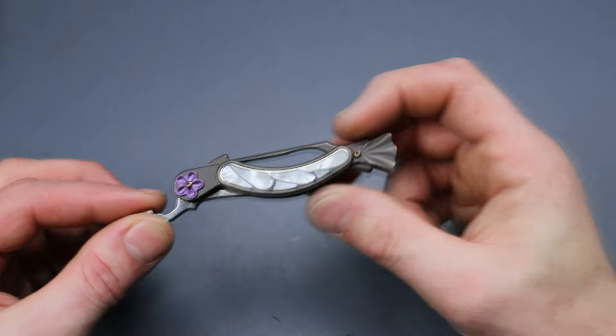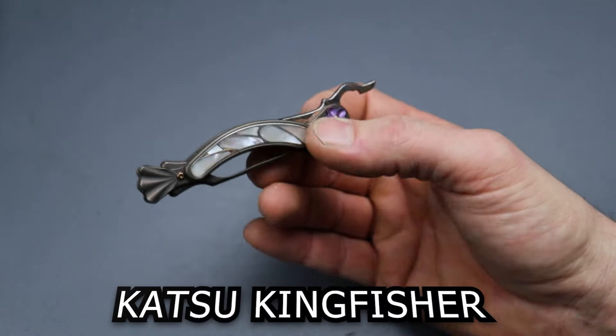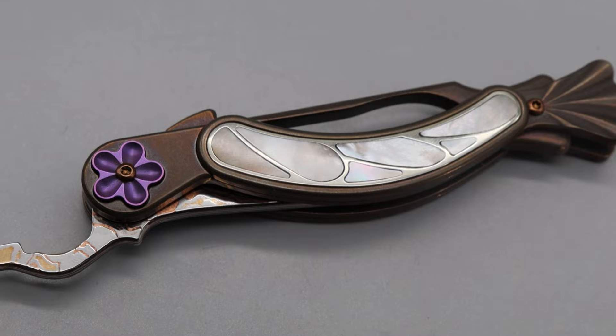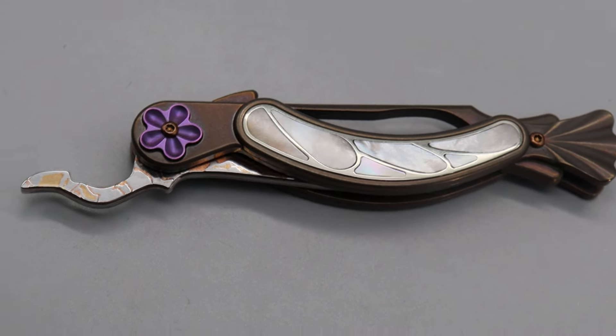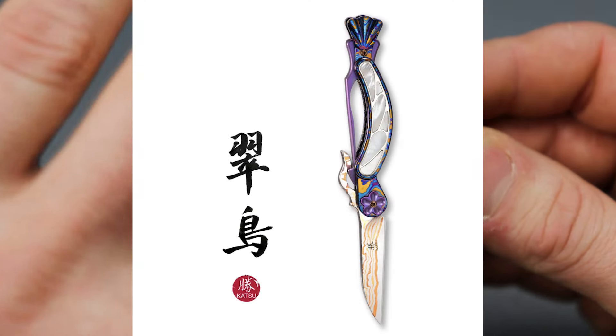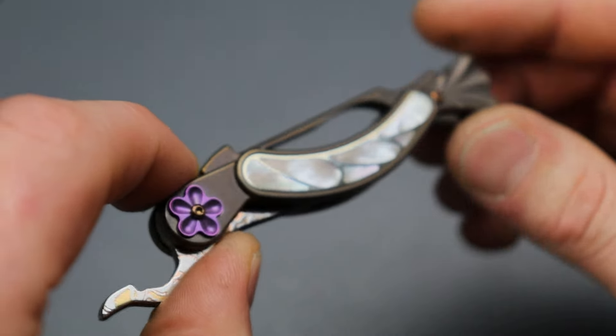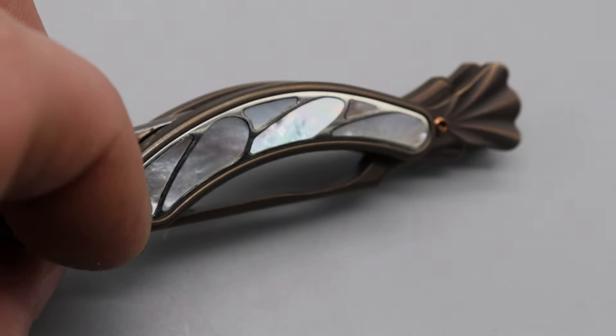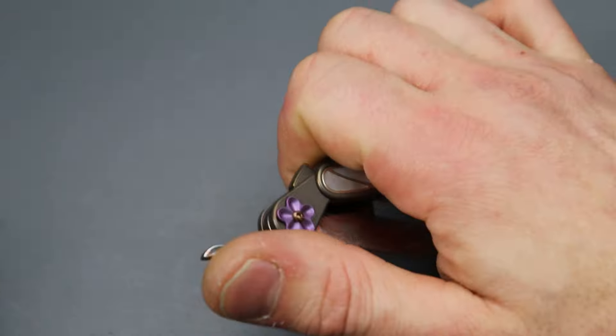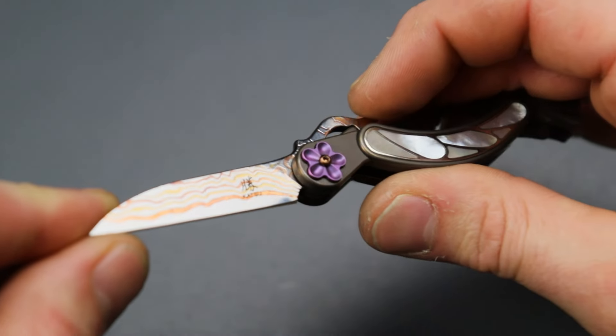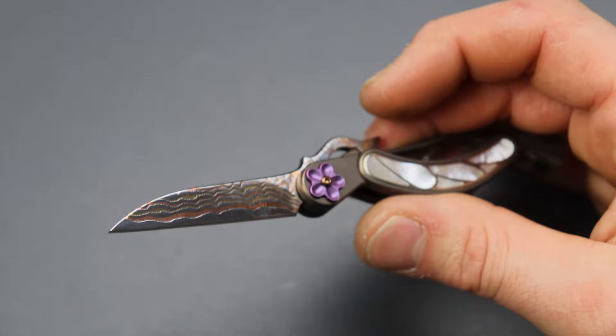This is from Katsu and this is the Kingfisher. It does come in a couple different versions, including an even more premium version with Tymascus that looks gorgeous. This has a titanium handle, mother of pearl inlays on both sides as you can see, and a copper Damascus blade. This is a locking folder.